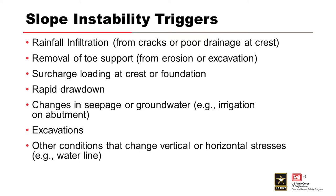There are several things that can trigger slope instability. Water is one of the primary things — whether it's water being introduced at the crest of a dam through cracks or because of poor drainage; whether we add load or remove resistance through something like an inadvertent excavation at the toe or erosion at the toe of an embankment; a surcharge loading at the crest that increases a driving force; or a rapid drawdown condition where the water is drawn down such that we no longer have water on the water side but the soils still have excess pore water pressure and reduced strength. Also, changes in seepage or groundwater regime, excavations, or any other conditions that change the stress condition can be triggers.